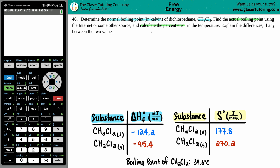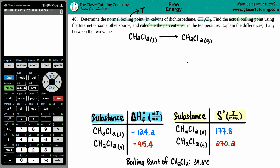A boiling point is a specific temperature value — we're looking for T. Boiling specifically means taking a liquid to a gas, so for CH₂Cl₂ we write the balanced equation: CH₂Cl₂ (liquid) → CH₂Cl₂ (gas). The equation is already balanced, and we need to find the temperature of this phase change.